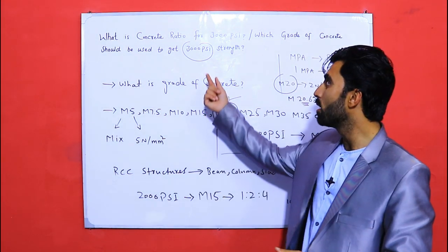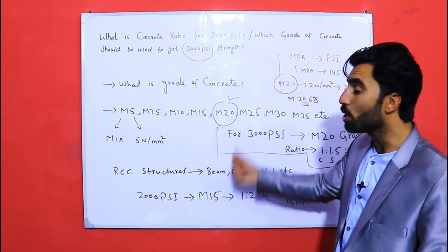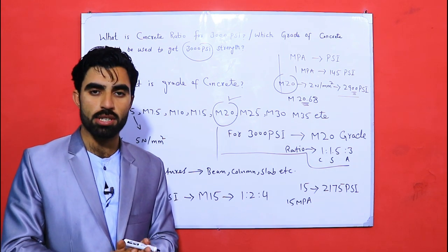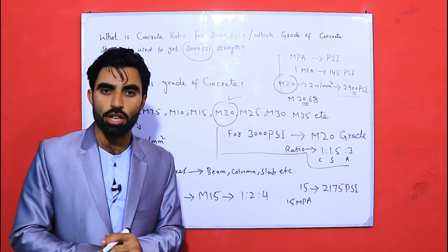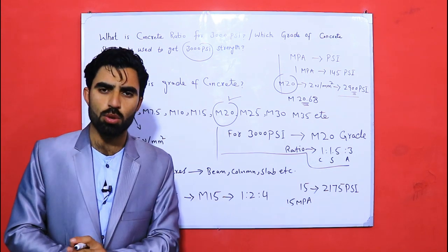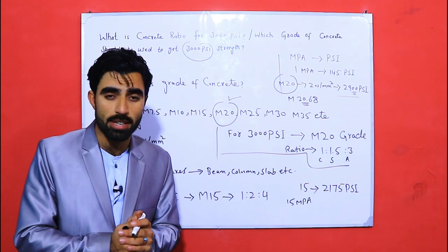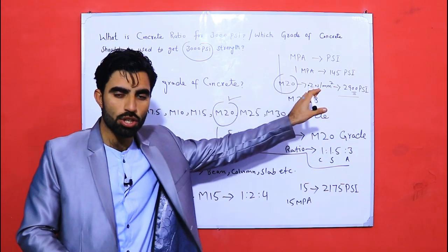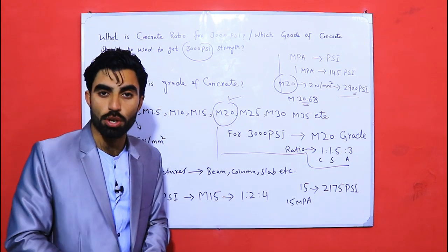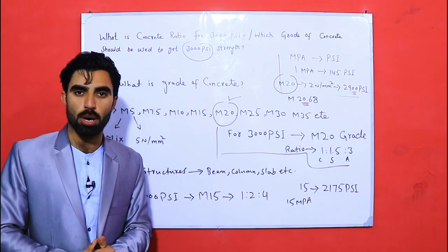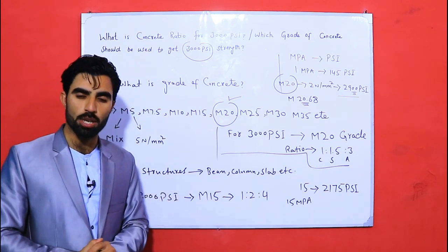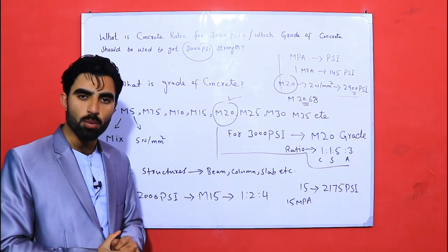If you have any questions related to this topic, please comment below. This is very important for structure designers and concrete technologists. After calculating loads, you need to determine the required strength — whether 1000, 2000, or 3000 PSI — and then select the appropriate grade of concrete. If this video was helpful, please like, subscribe, and press the bell icon. Thanks for watching, see you in the next video, goodbye.